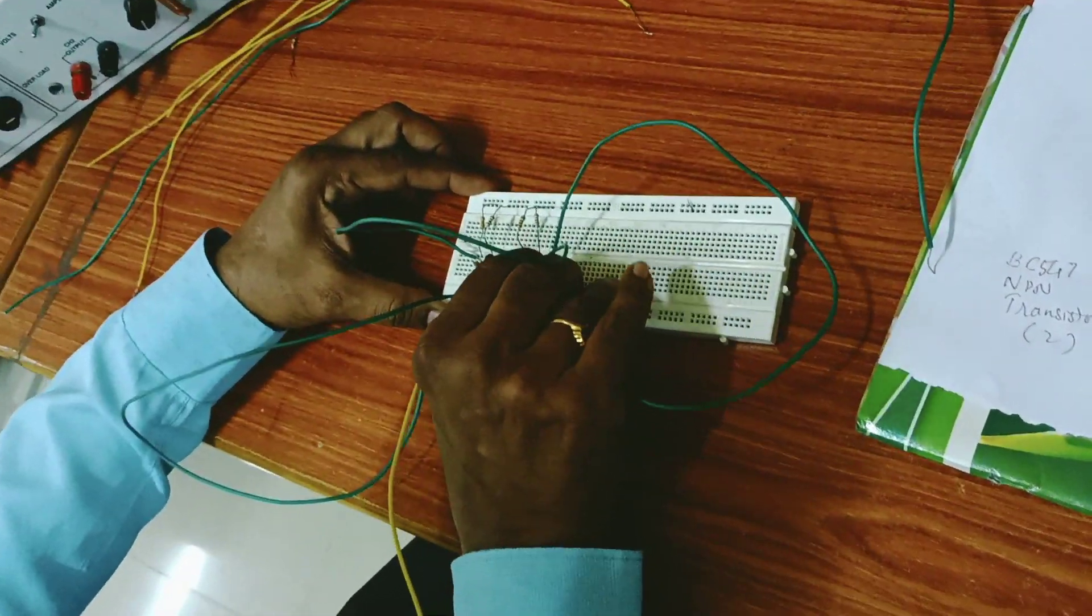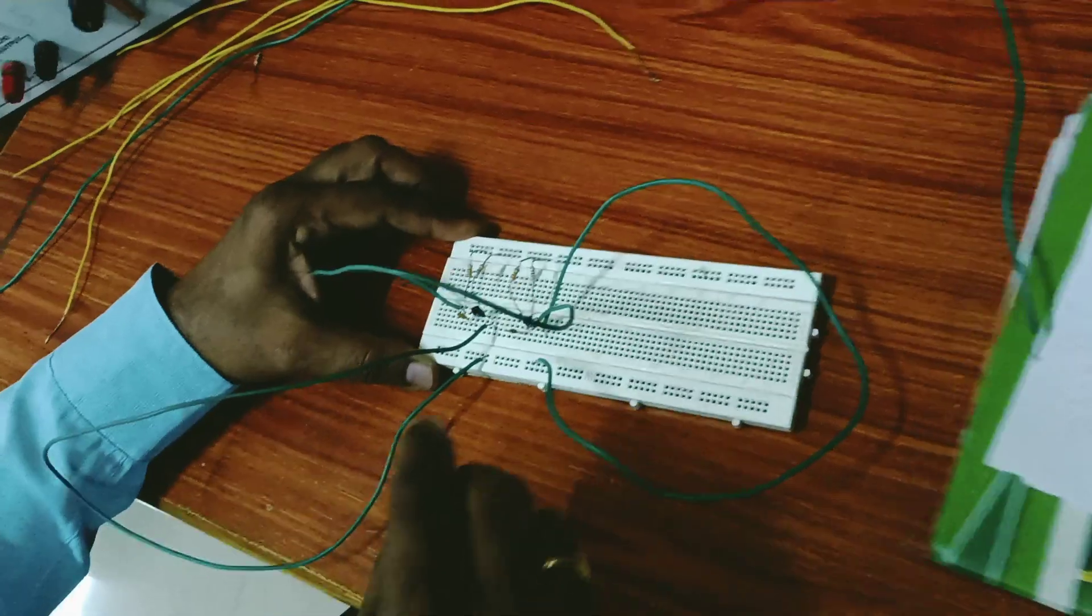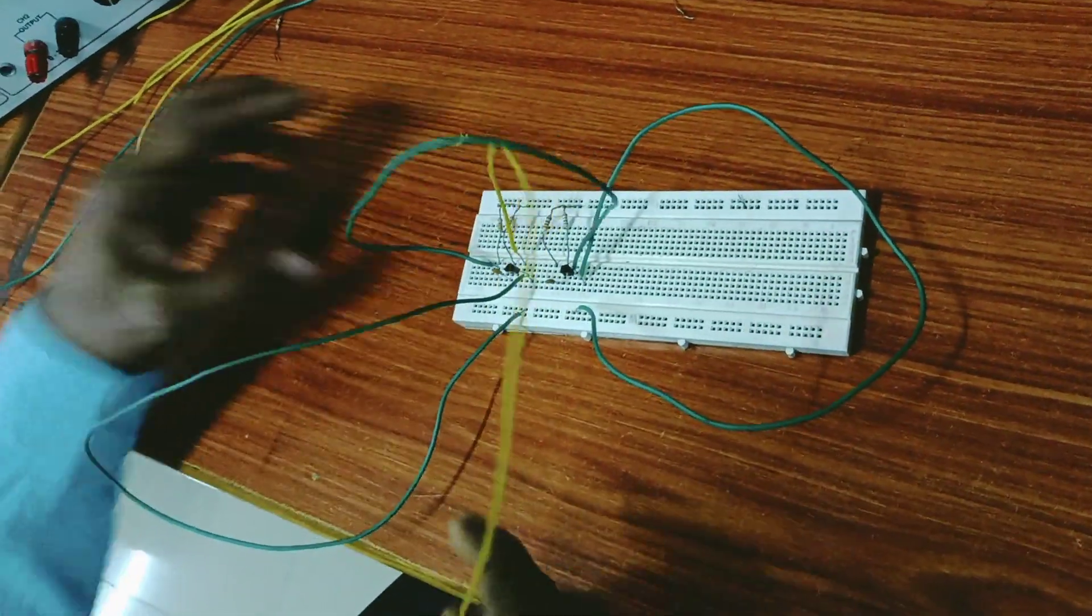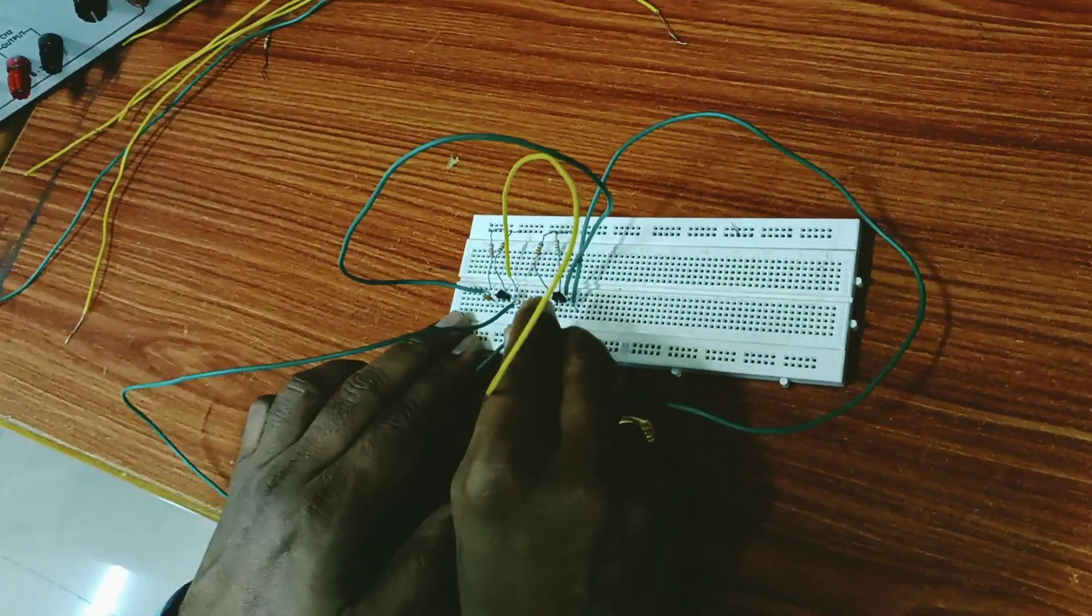Then here take one more connection of this kind, connect the base terminal of this second transistor to the junction of 33 kilohms and the capacitor over here.